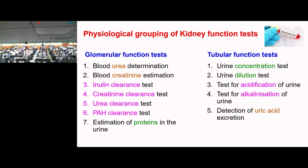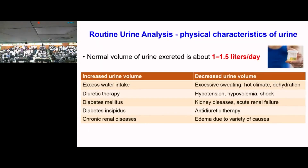This can come as a viva question — remember at least two to three tests under each category. Now we move on to routine urine analysis. Under routine urine investigations, the first heading is physical characteristics of urine, which includes the volume of urine.